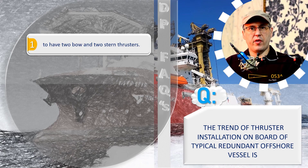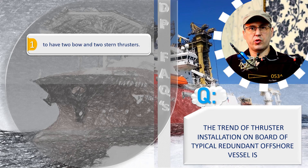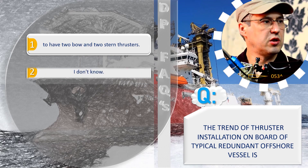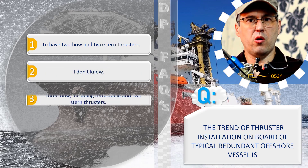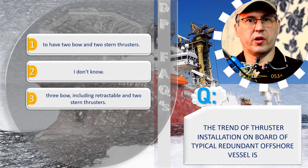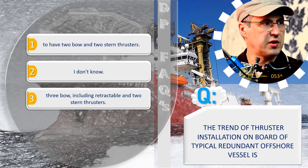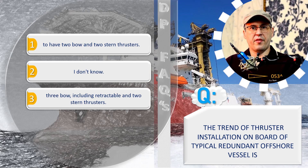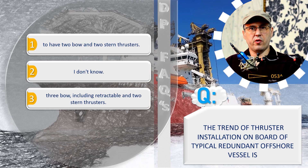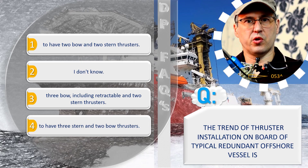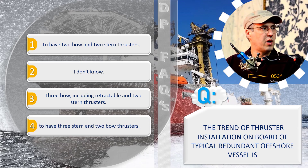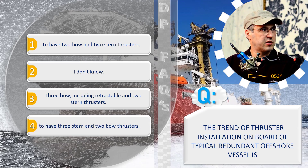Variant one. Variant two. Variant three: three bow, including retractable, and two stern thrusters. And variant four: to have three stern and two bow thrusters.